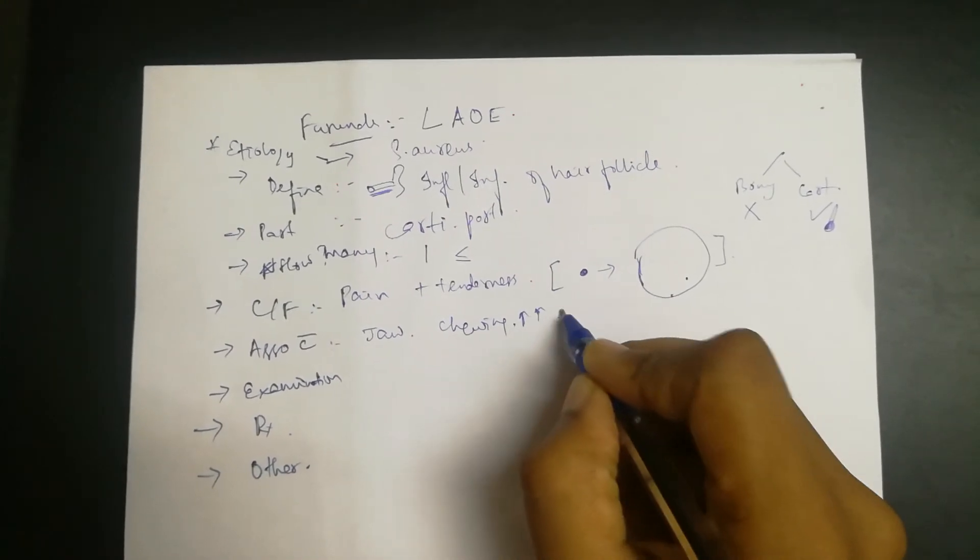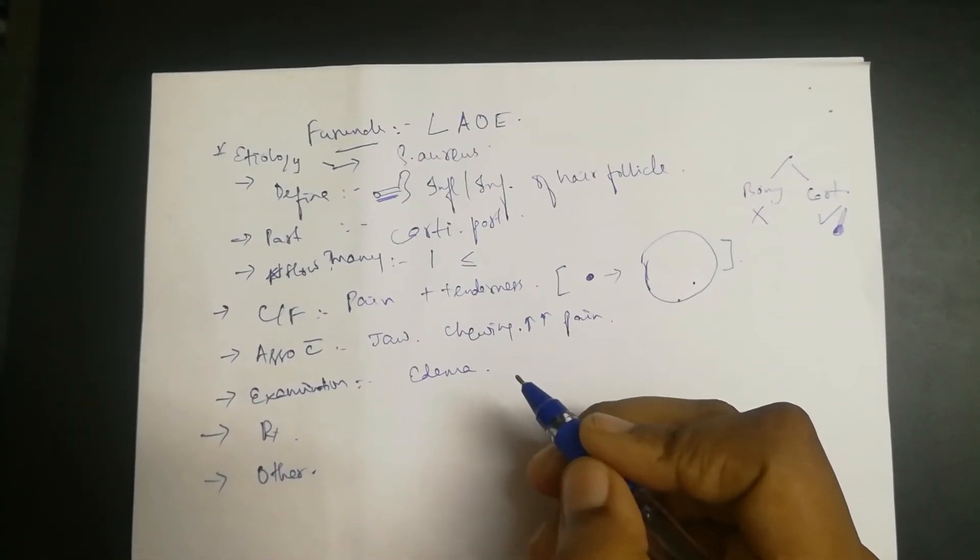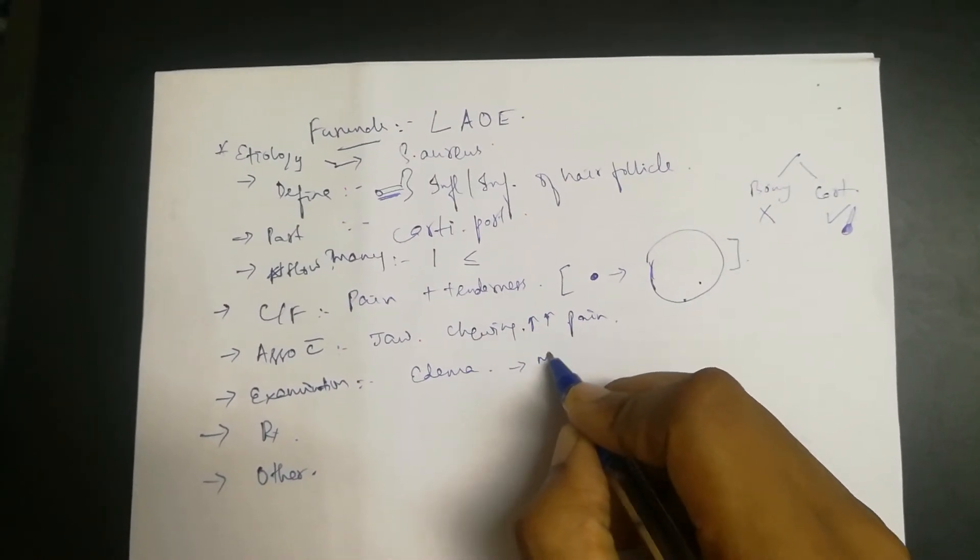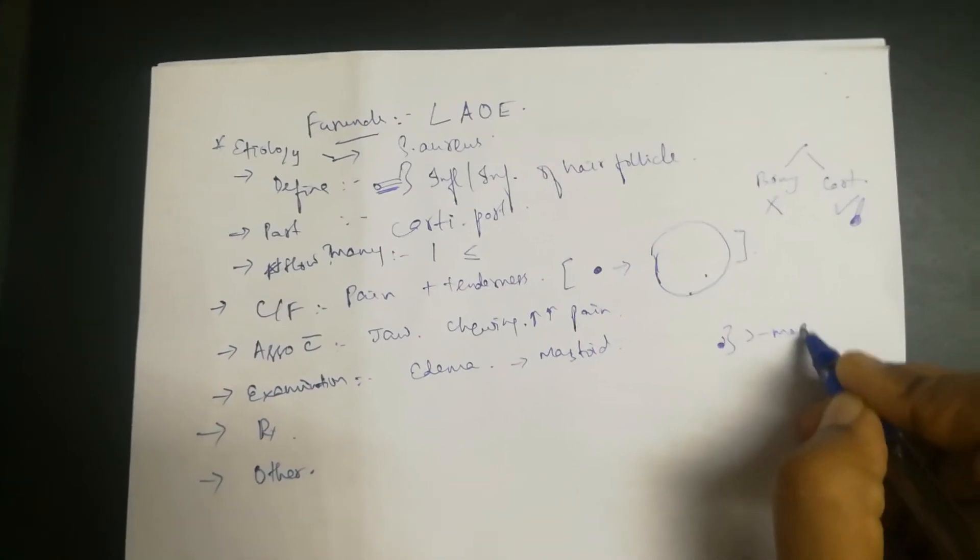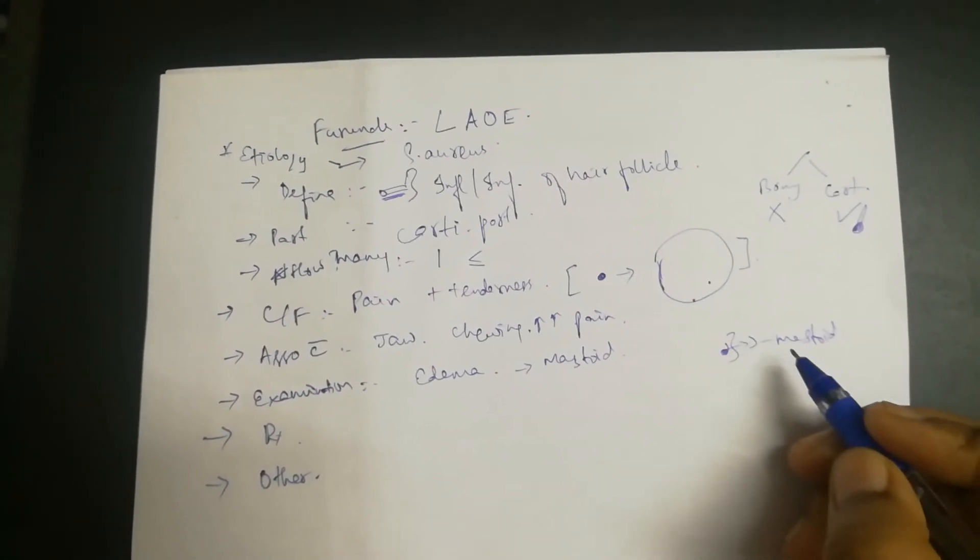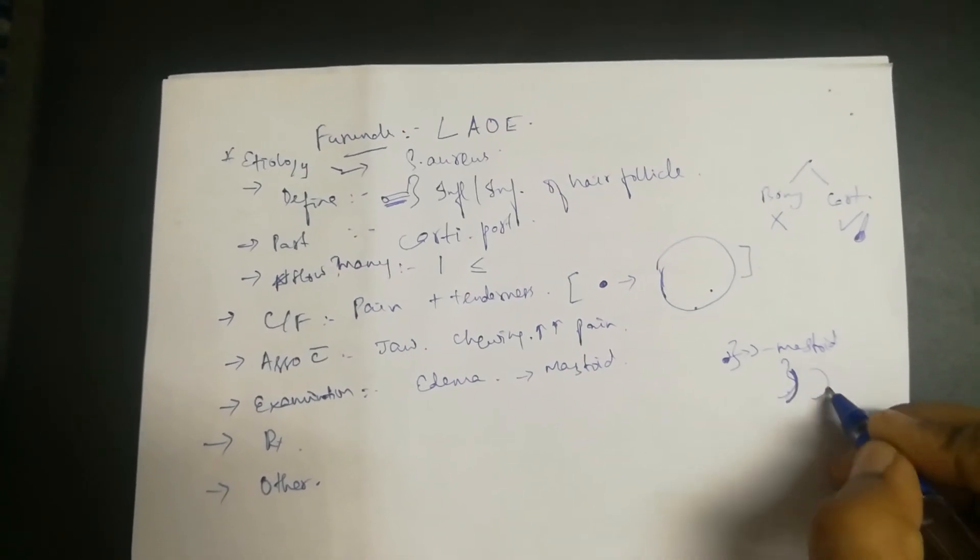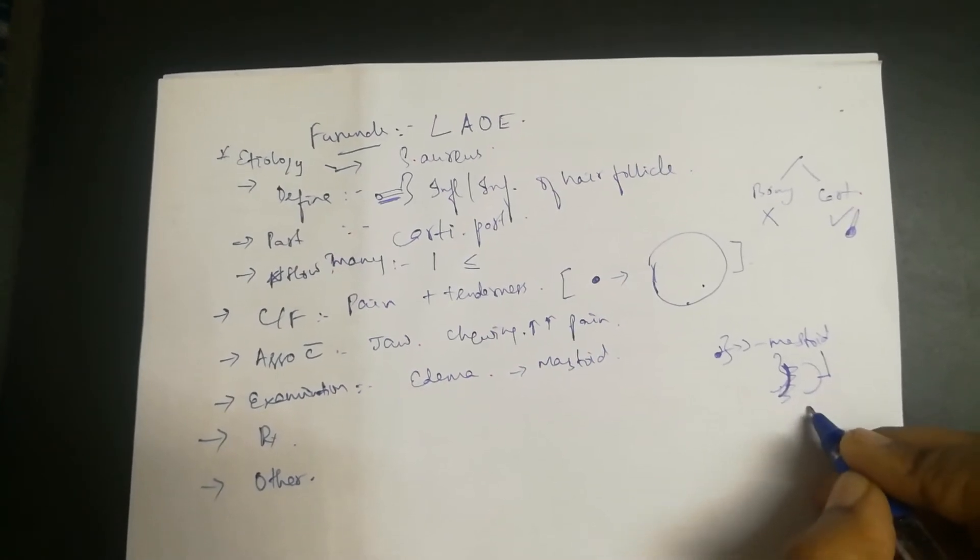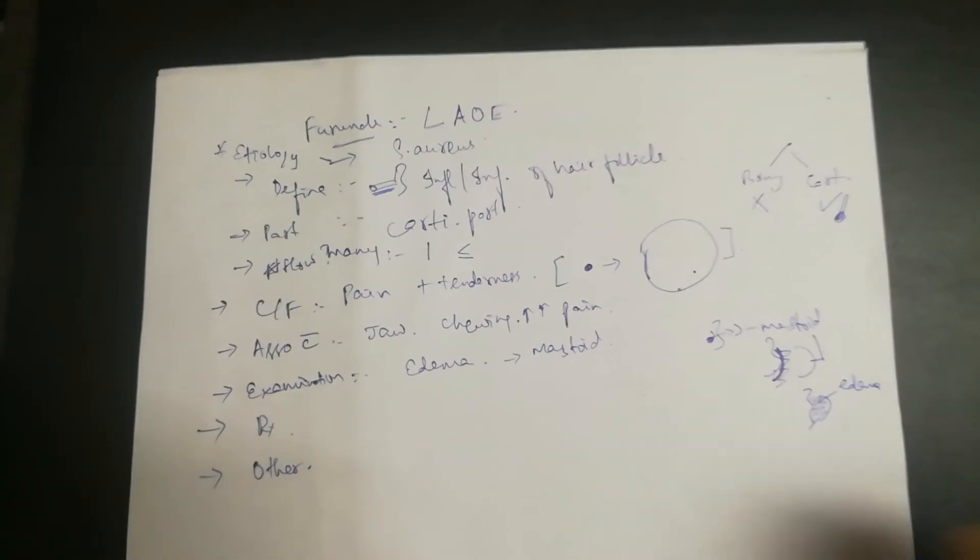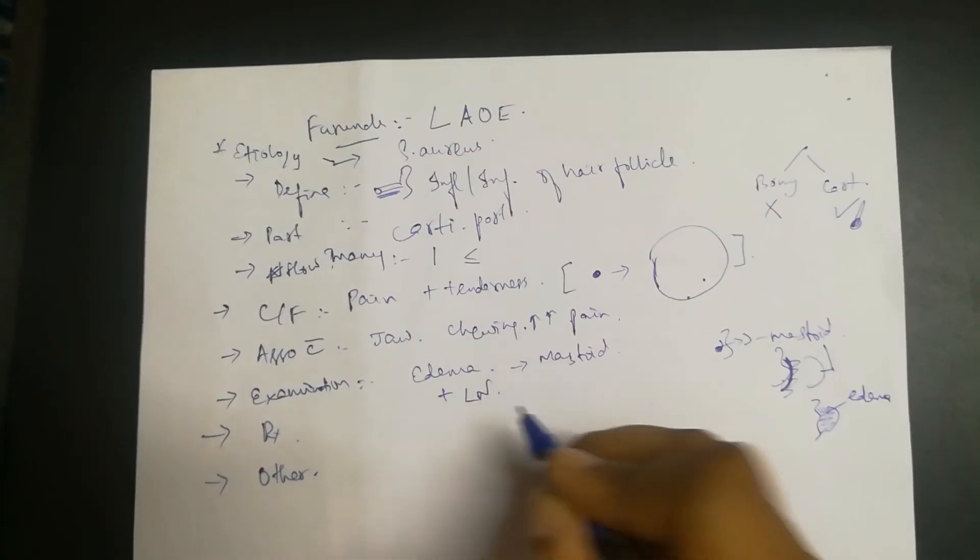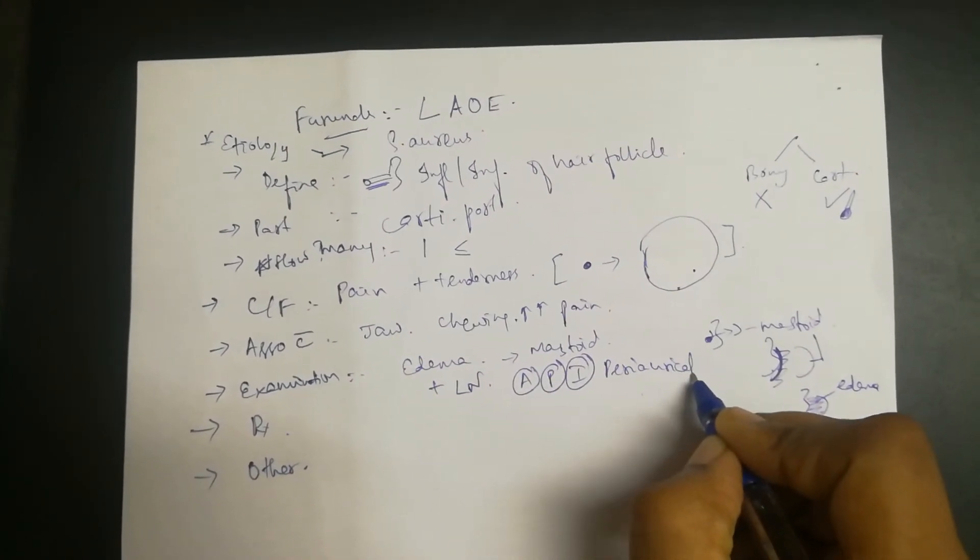On examination, there will be edema. If there is a furuncle, there will be edema over the mastoid. The particular groove present behind the ear in front of the mastoid process will get obliterated. In addition to edema, there will be lymphadenopathy. Lymph nodes in the anterior, posterior, and inferior periauricular areas will be inflamed.